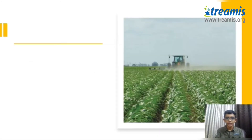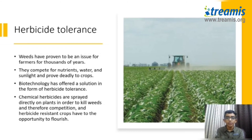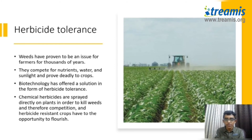Herbicide tolerance — weeds have proven to be an issue for farmers for thousands of years. They compete for nutrients, water, and sunlight, and prove deadly to crops. Biotechnology has offered a solution in the form of herbicide tolerance. Chemical herbicides are sprayed directly on plants in order to kill weeds and protect crops.